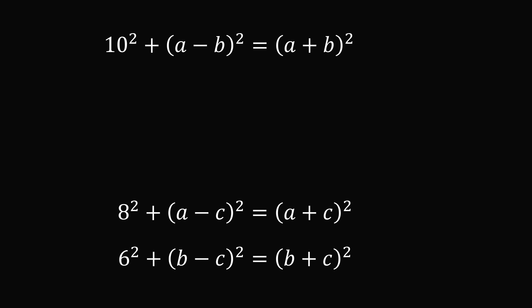Let's work on the first equation. We'll expand each binomial. We can then cancel out a squared and b squared on both sides. We can then group the 2ab term on the right hand side and the negative 2ab term on the left hand side, so that 4ab is equal to 100. This means ab is equal to 25.